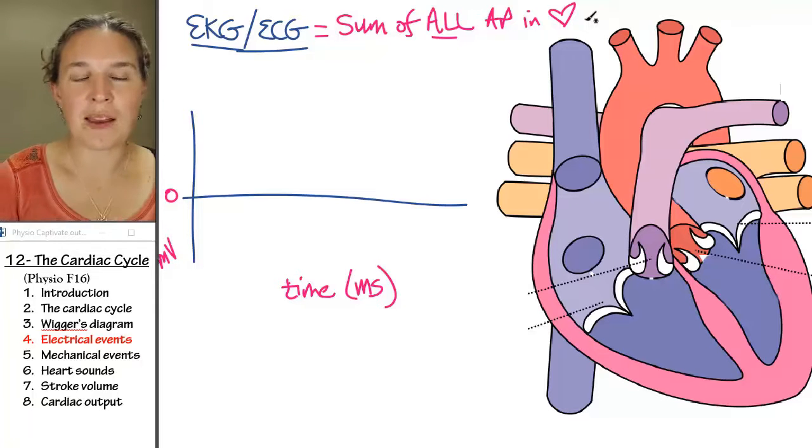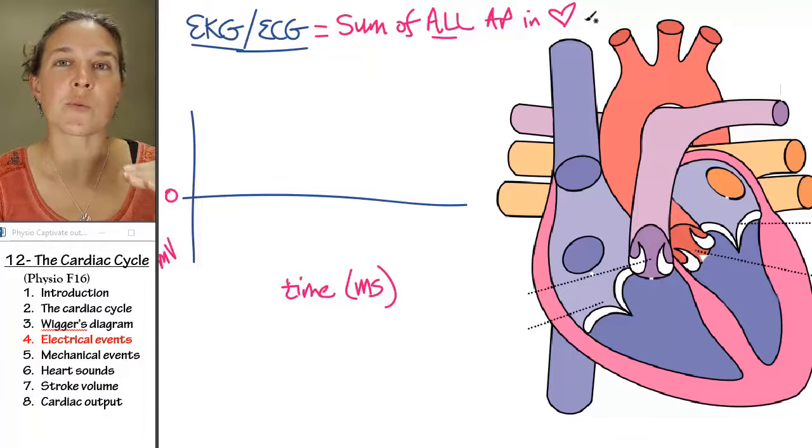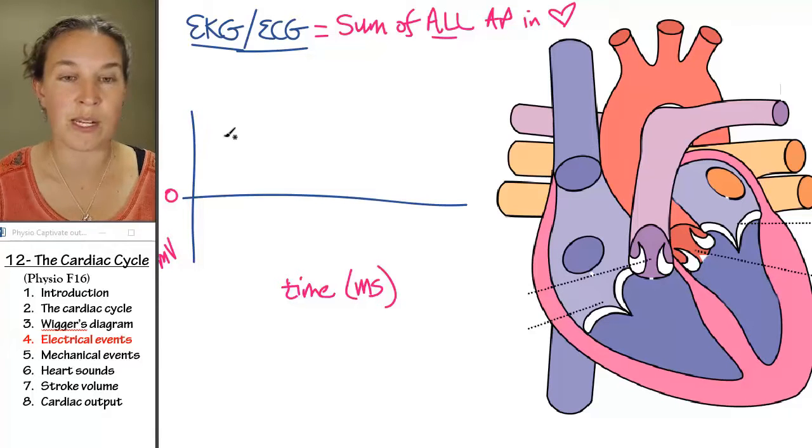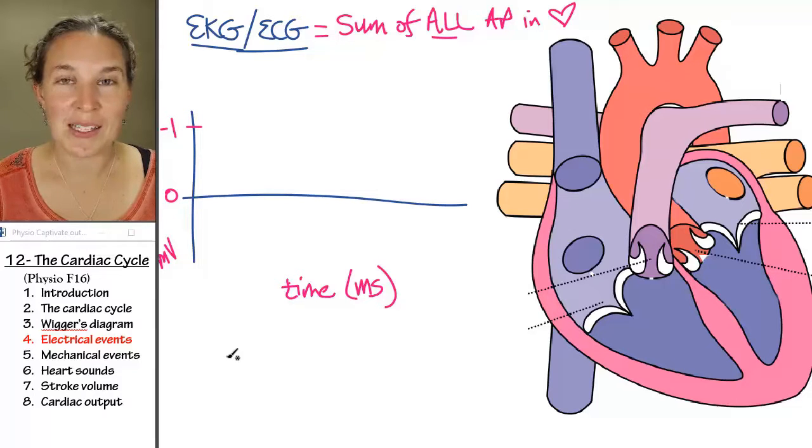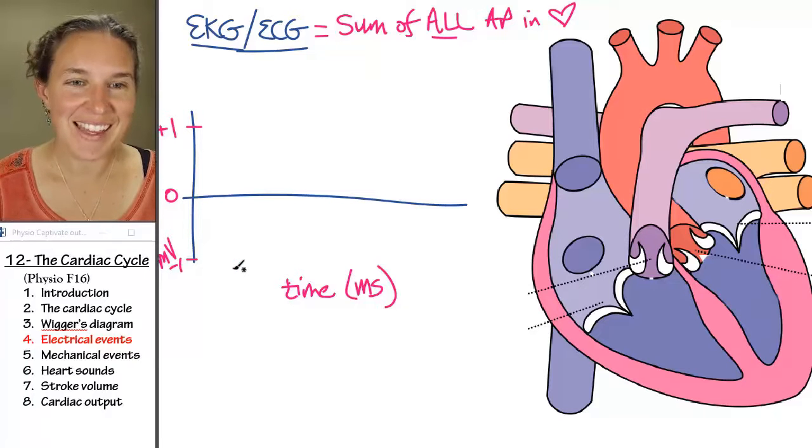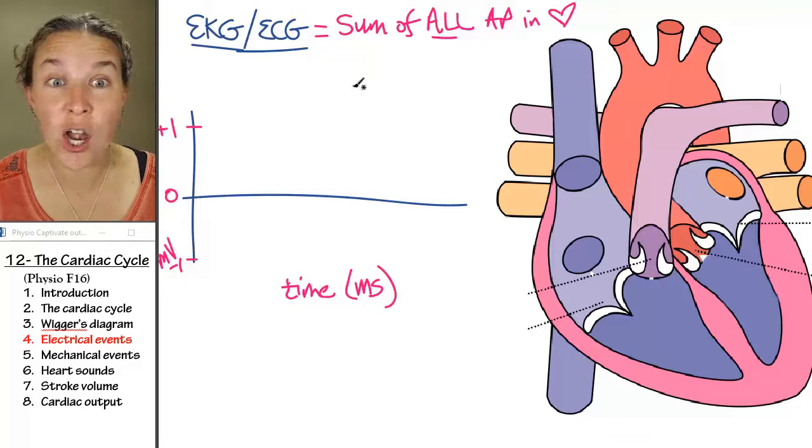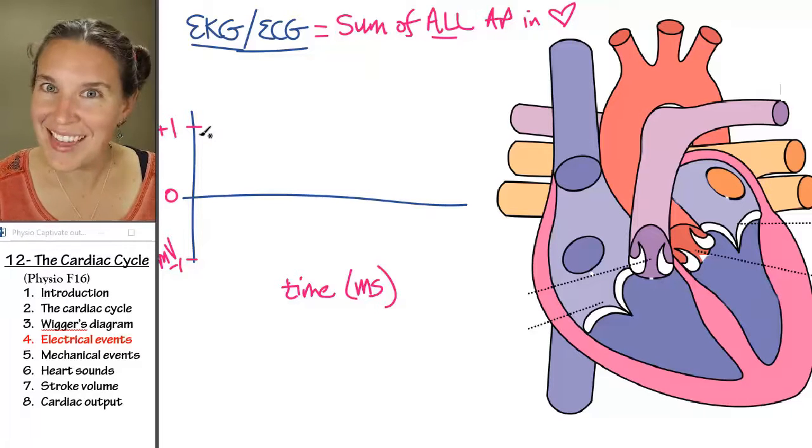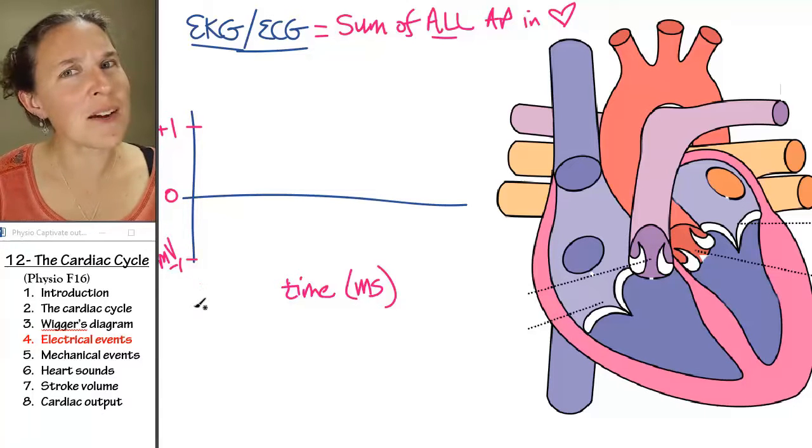So what do you think my range is? How high are we going to go? How high in the positive millivolt arena are we going to go? And how low in the negative millivolt arena are we going to go? Ready? I'm going to blow your mind. One, that is not a typo because I'm not typing, but it's not a typo. This is, we're talking the sum of all action potentials in your heart add up to positive one. That's as high as we're going to go. And negative one, that's as low as we're going to go.